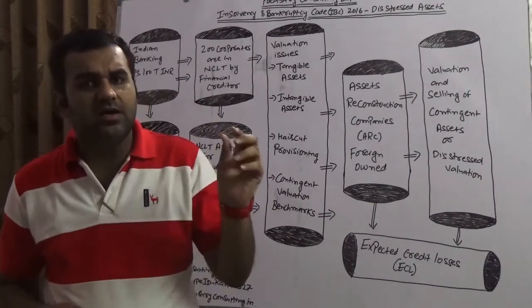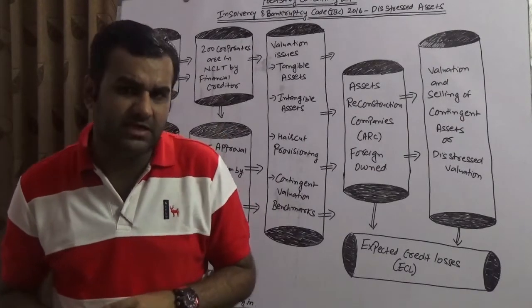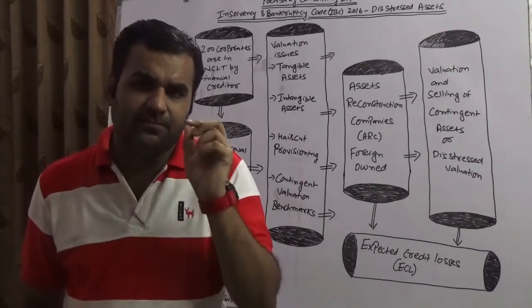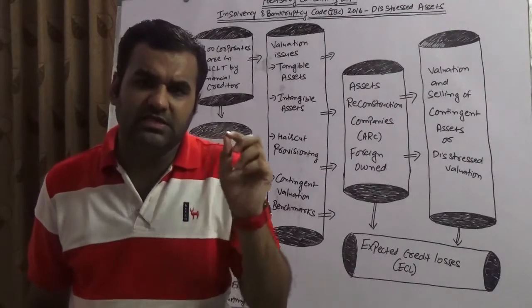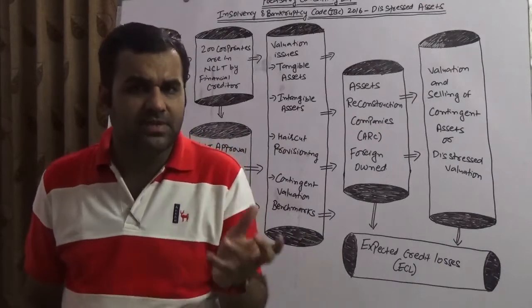So there are hundred people who wanted to sell their asset and there are only two buyers who wanted to buy the asset. You can very well understand that what would be the haircut these hundred sellers would have to take in their books because they are selling it. As simple as that.